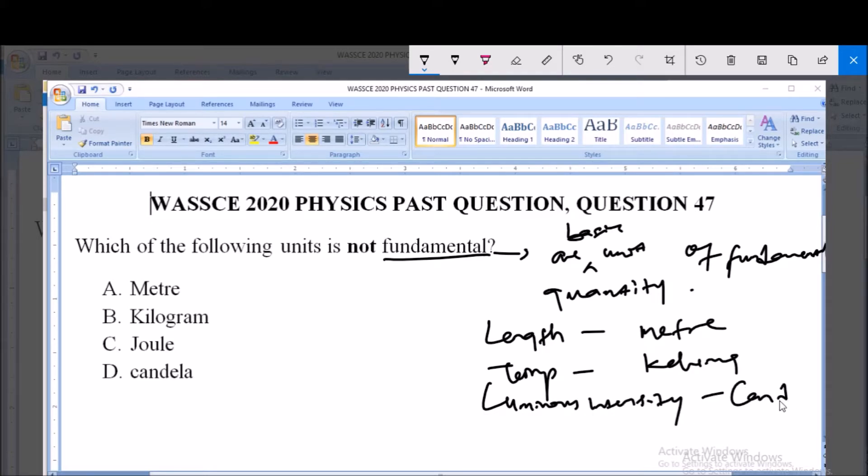We have mass, the unit is kilogram. Now all these are fundamental quantities with their fundamental units. Now the question says we should pick an option which is not a fundamental unit. That means the correct answer is a derived unit.